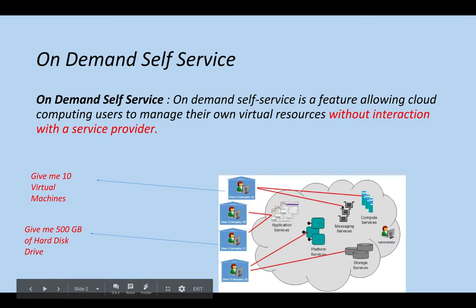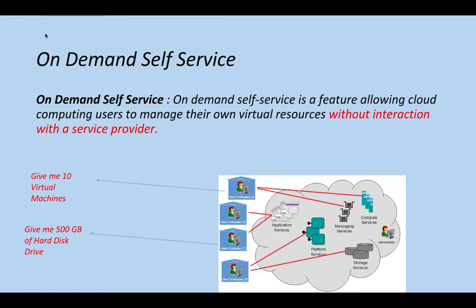Now think from a cloud service provider (CSP) point of view. As we studied in the last lecture, we need to study these five characteristics from both standpoints to have a solid understanding of cloud computing. If you are a service provider with many customers using your cloud infrastructure, you have automated things in such a way that you are not responding to each individual request. Within a few clicks, customers should be able to get those resources, and customers will have great faith in you and recommend you to others.